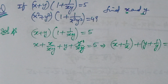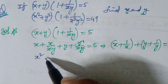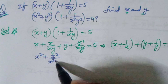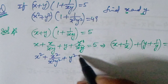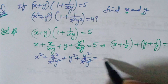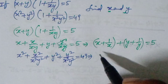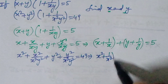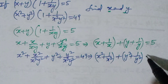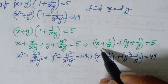Now multiplying the second expression: (x² + y²)(1 + 1/(x²y²)) = 49. Expanding directly gives x² + x²/(x²y²) + y² + y²/(x²y²) = 49, which simplifies to x² + 1/x² + y² + 1/y² = 49.